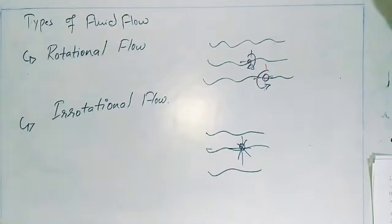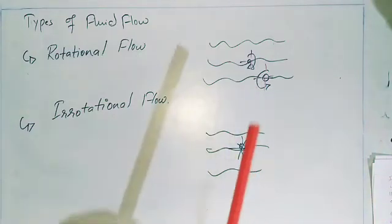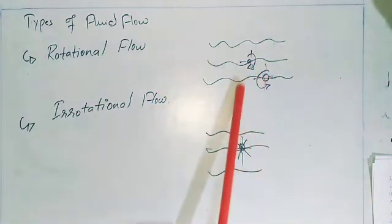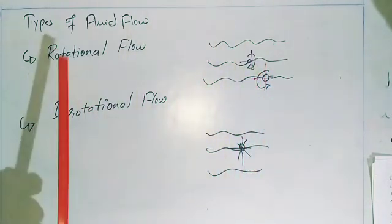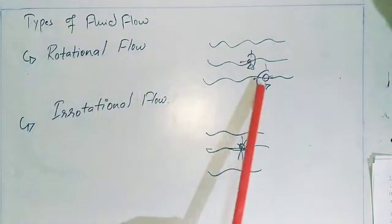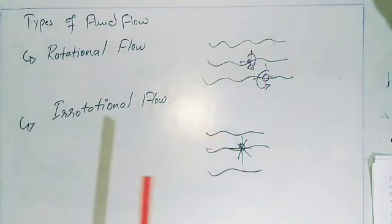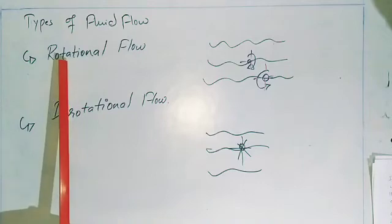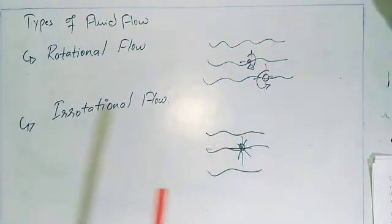The next type of flow is rotational and irrotational flow. Rotational flow is defined as the type of flow in which the fluid particles, while traveling along a streamline, rotate about their own axis — such flows are known as rotational flows. Irrotational flow is defined as the type of flow in which the fluid particles do not rotate about their own axis while traveling along a streamline.